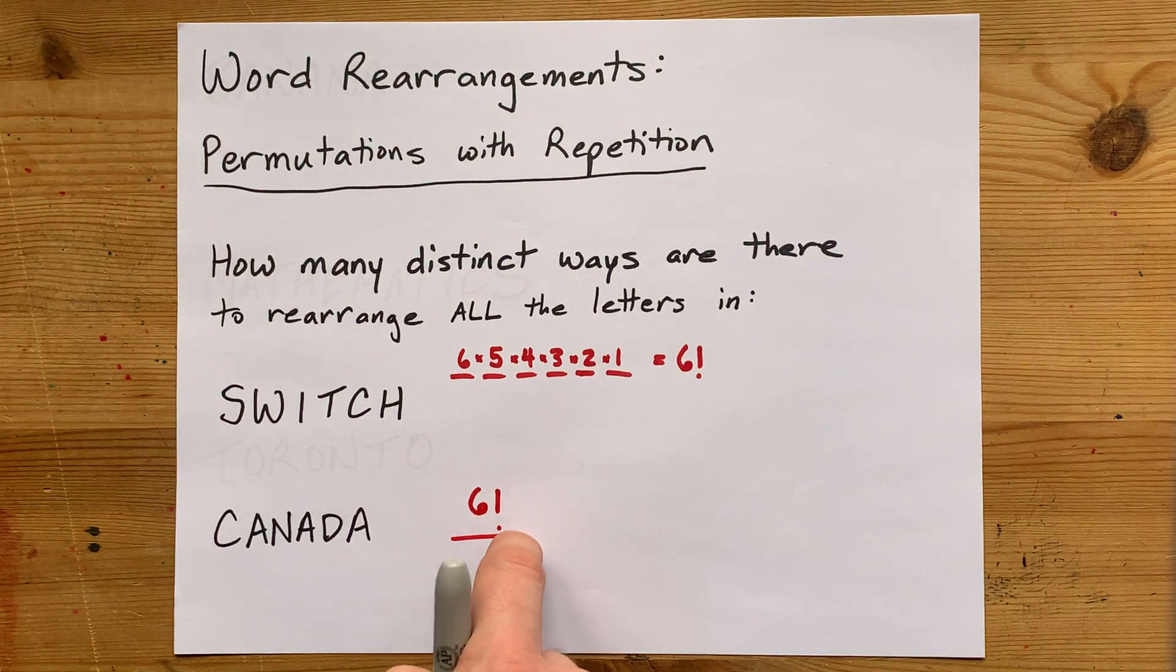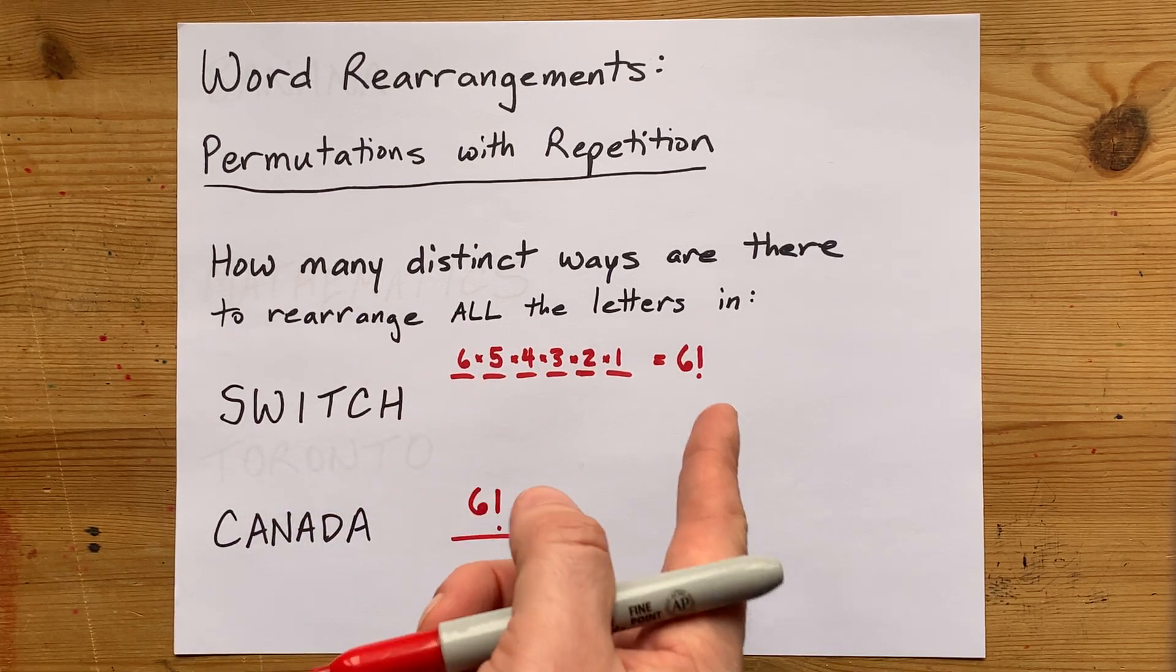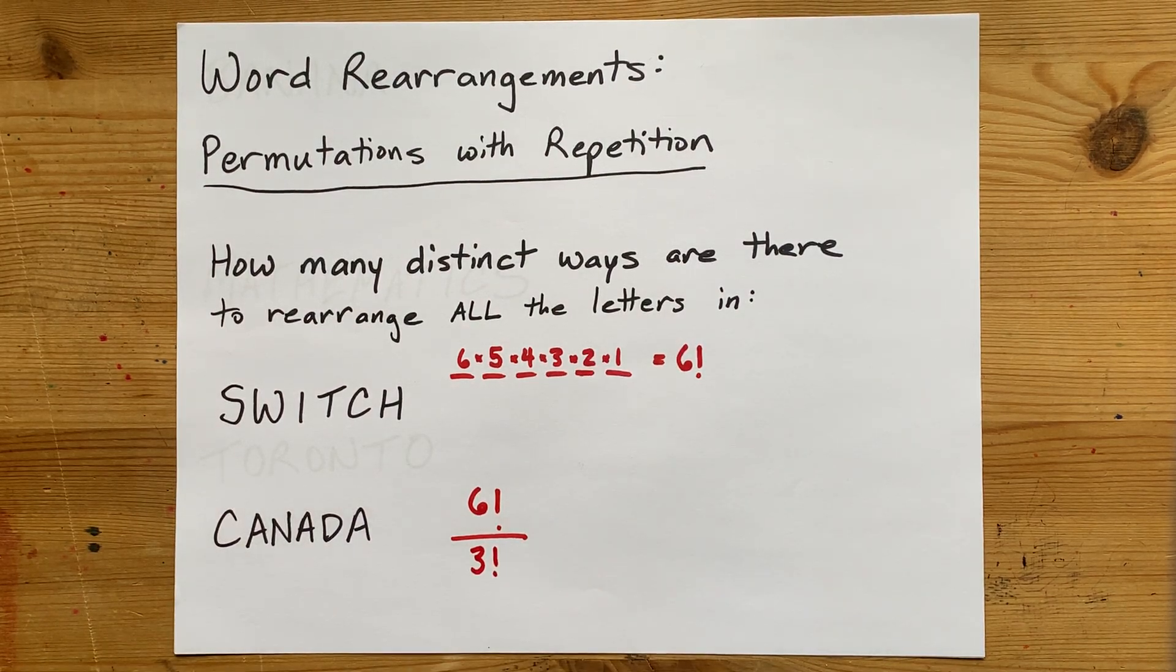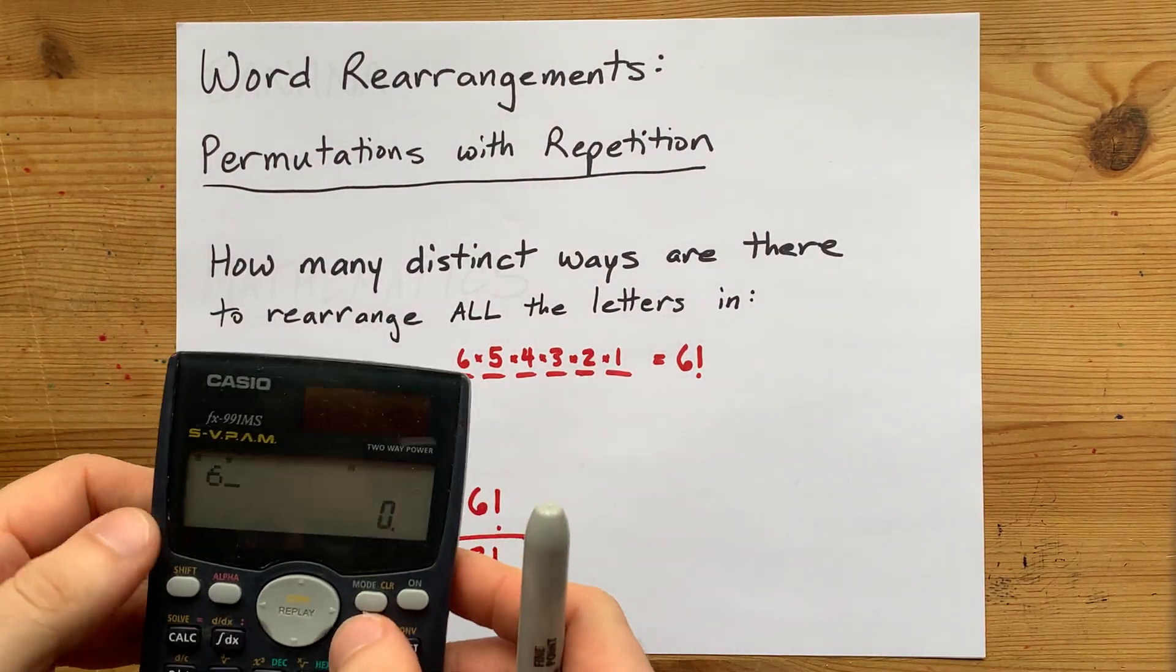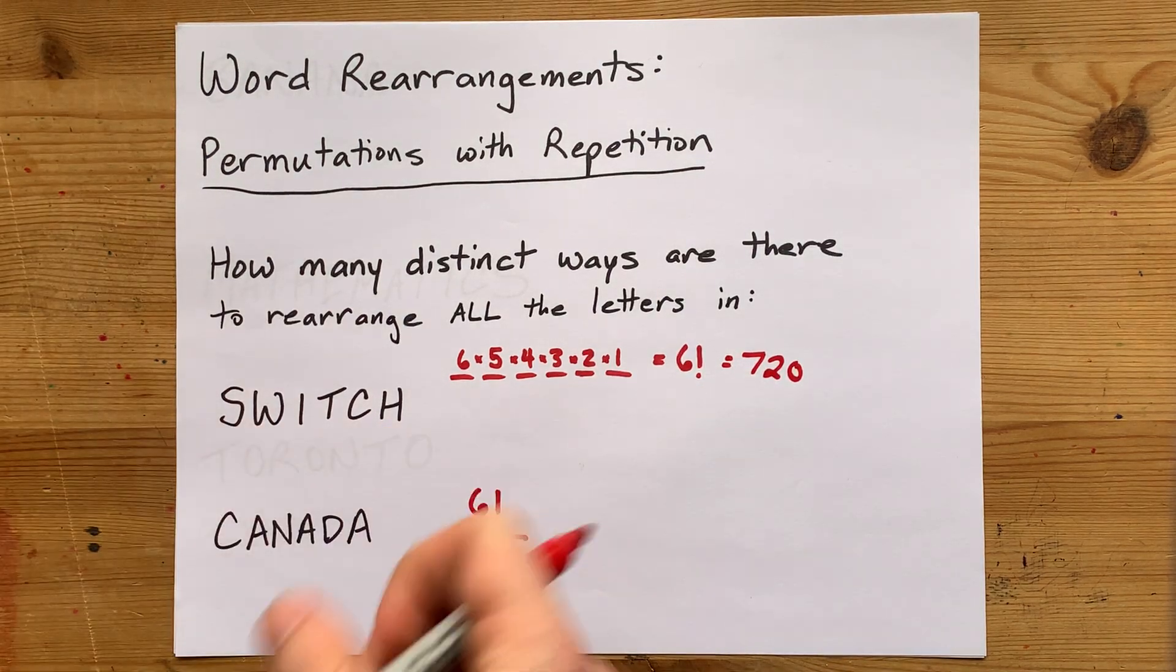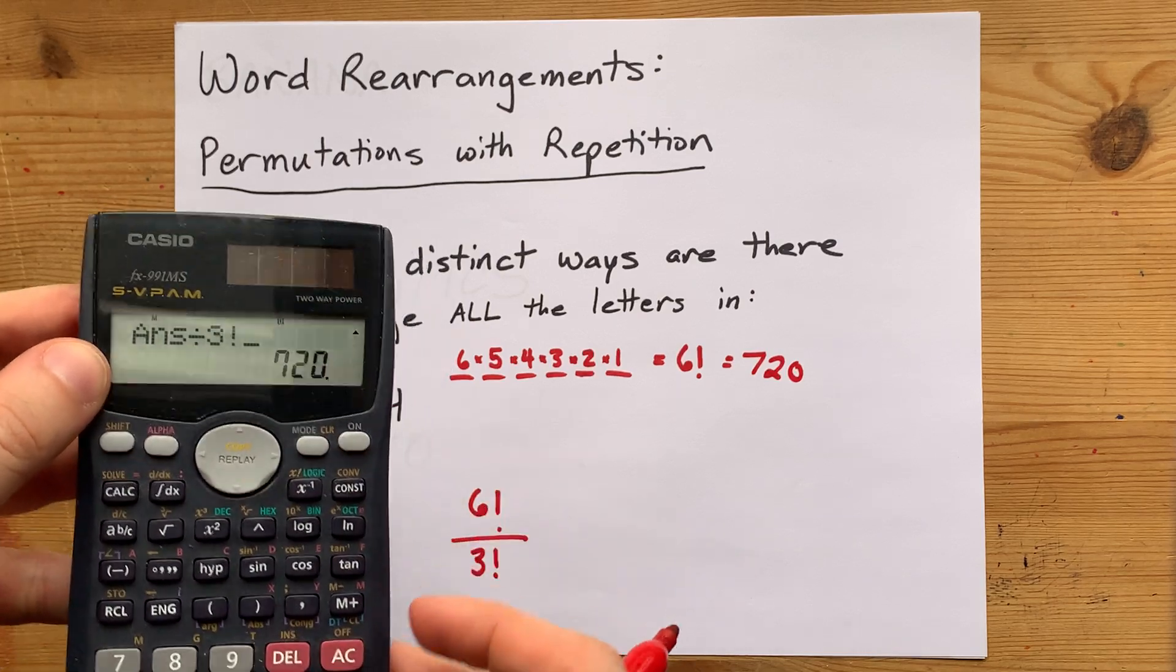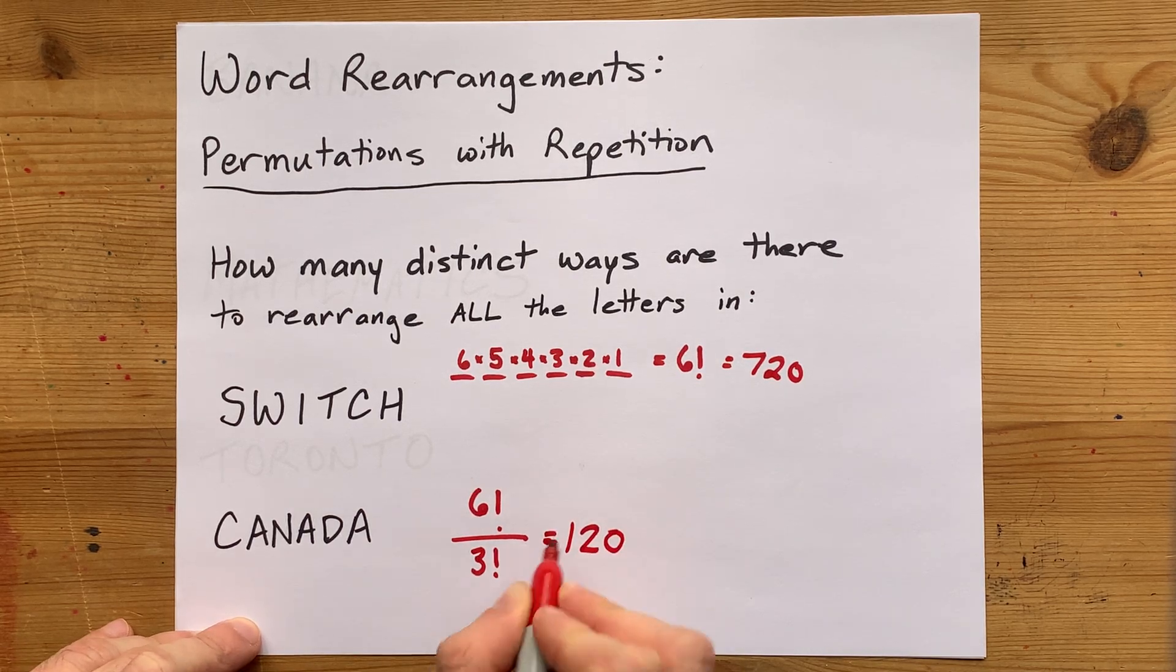The way you're going to do that is to divide by however many possible ways there are to rearrange those three letters without seeing a difference. There are three of them, so the answer is divide it by three factorial. Six factorial on this calculator is 720. So there's 720 ways to rearrange this six-letter word, but I have to divide by three factorial to get only 120 distinct ways to rearrange the letters here.